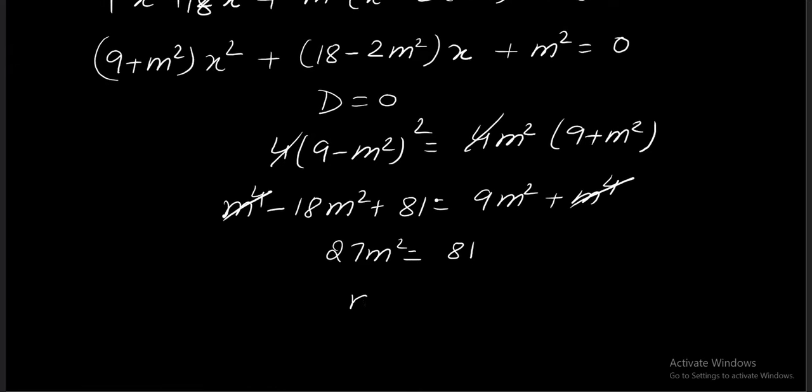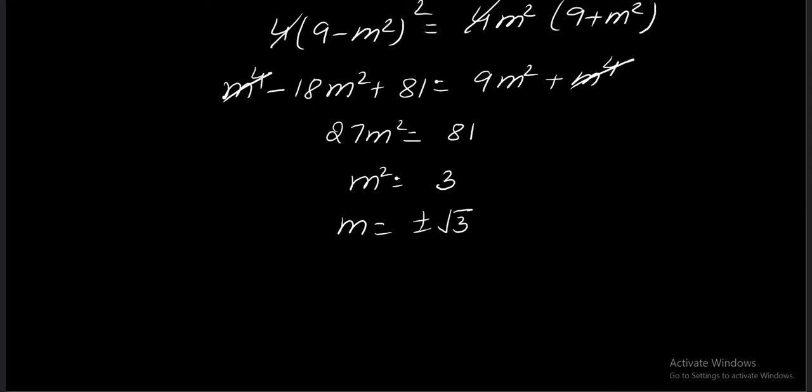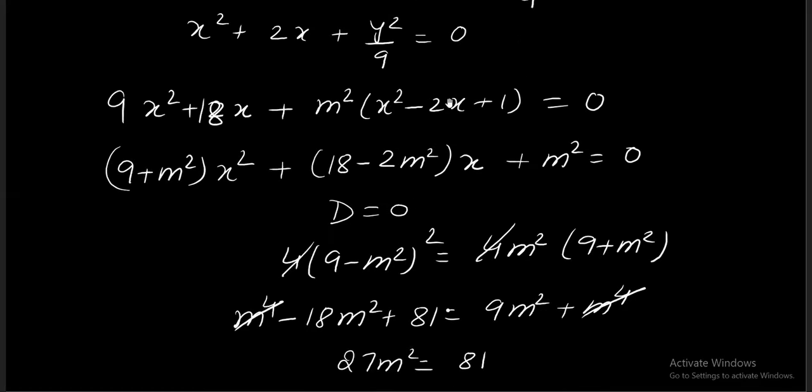So m square is 3. So m is plus minus root 3. If we are getting m equals plus minus root 3, then product of the slopes from the point 1,0 is minus 3. So here is the answer that we have for the question.